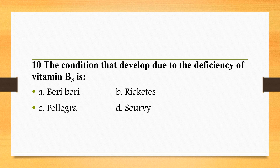The condition that develops due to deficiency of vitamin B3 is pellagra. Vitamin B3 is also known as niacin, so the answer is pellagra. Beriberi is due to deficiency of thiamine, also called vitamin B1. Rickets is due to deficiency of vitamin D, and scurvy is due to deficiency of vitamin C.